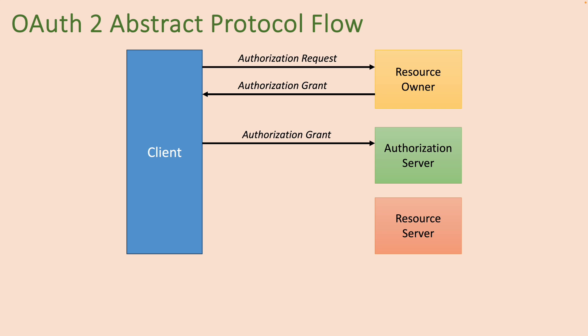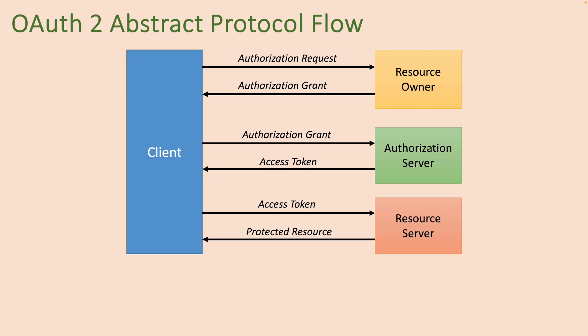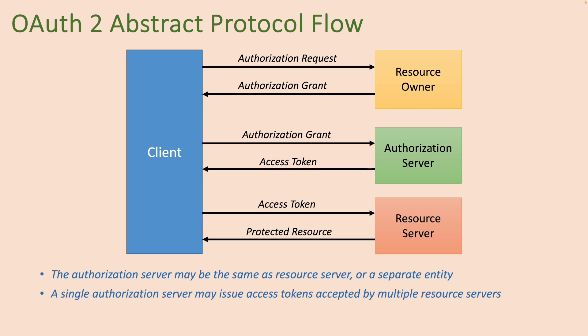The client sends a request to the authorization server using the authorization grant. If the authorization grant is valid, the authorization server returns an access token to the client. The client then uses the access token to send a request to the resource server. If the access token is valid, the resource server returns the protected resource to the client. Note that the authorization server may be the same as the resource server or it can be a separate entity, and a single authorization server may issue access tokens accepted by multiple resource servers.